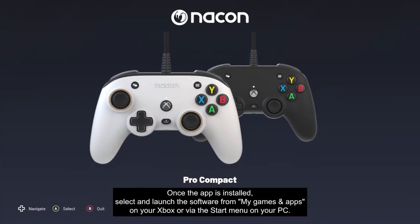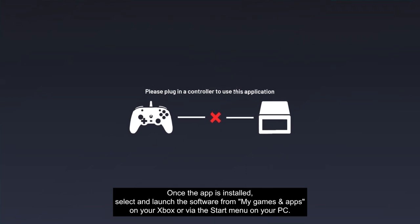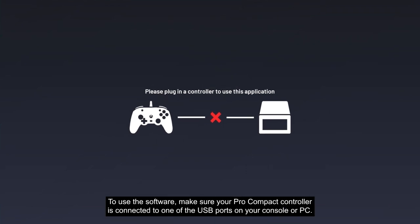Once the app is installed, select and launch the software from My Games and Apps on your Xbox, or via the start menu on your PC. To use the software, make sure your Pro Compact controller is connected to one of the USB ports on your console or PC.